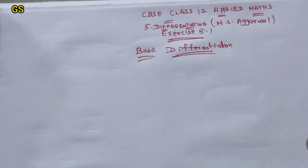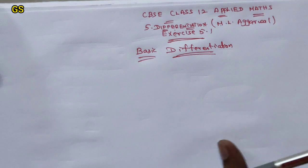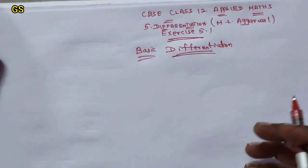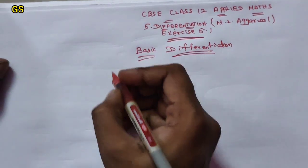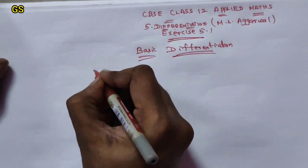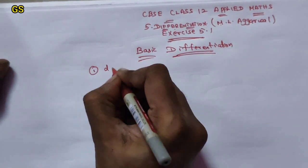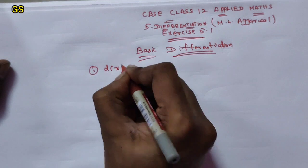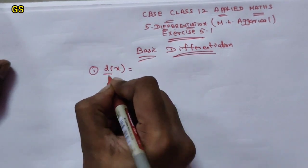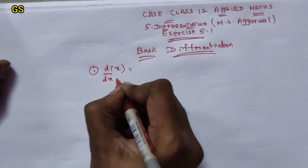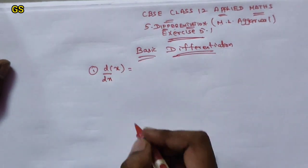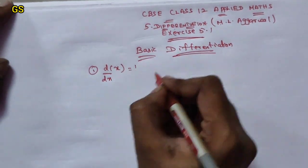Now, the formulas are based on the following. First, you will know this information. Formula 1: Differentiation of x. d/dx of x with respect to x is 1.